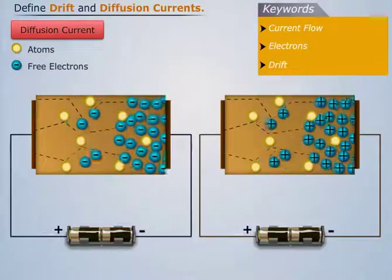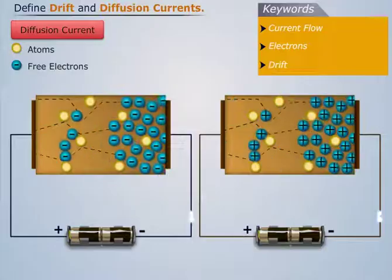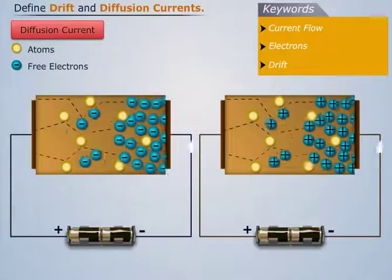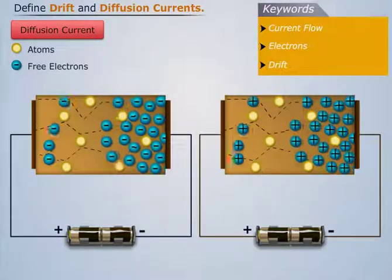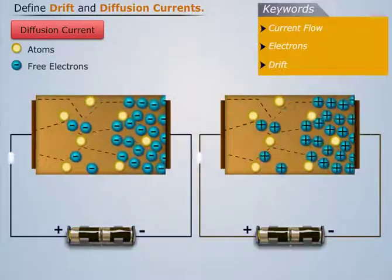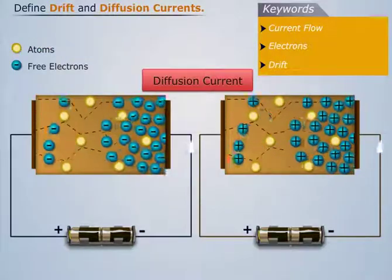They diffuse until they get eventually distributed throughout the material. This movement of charge carriers constitutes an electric current. Current produced in such manner is known as diffusion current.